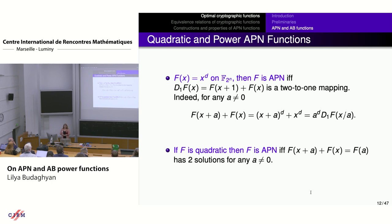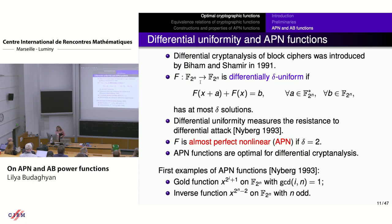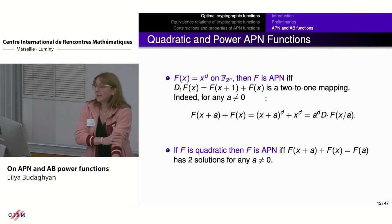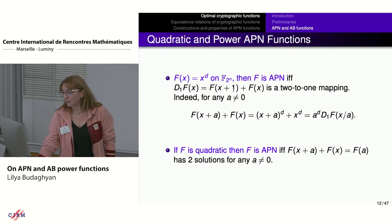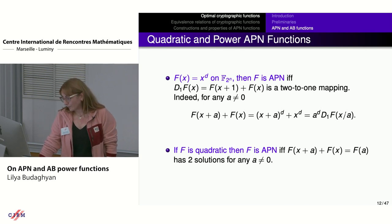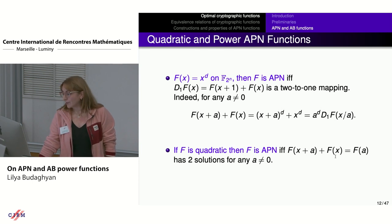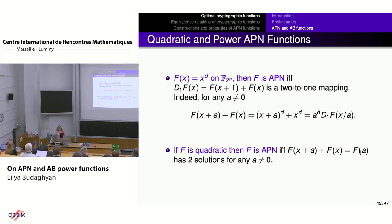For power functions, checking the APN property is simpler: instead of considering the equation for any non-zero a and any b, we can restrict to a equal to 1. For quadratic functions, instead of considering all b in f(x+a) + f(x) = b, we can restrict to b = f(a).